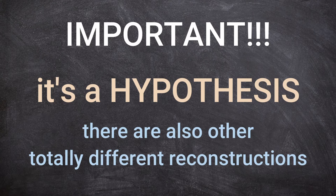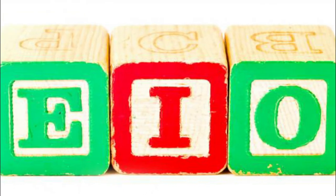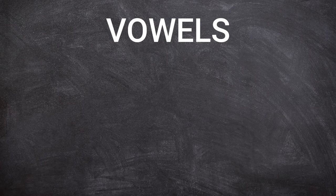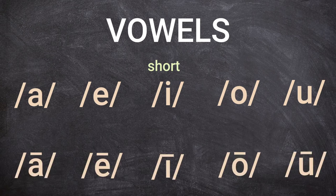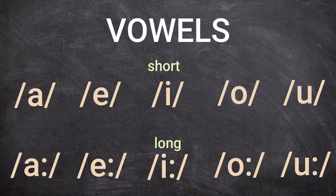Most scholars think Indo-European had five vowels that could be short or long, most probably similar to the sounds A, E, I, O, U. By convention, you see just the vowel symbol if it is short, or the symbol with a straight bar (macron) above if it is long: Ā, Ē, Ī, Ō, Ū. In pure phonetic transcription, long vowels can also be shown followed by a colon — both are just two ways to express the same sounds.